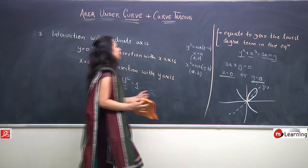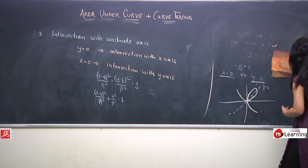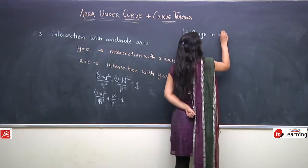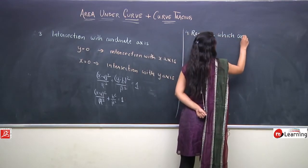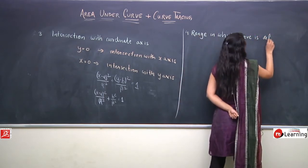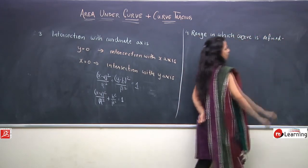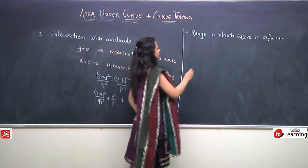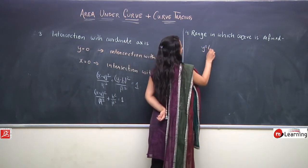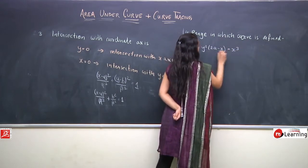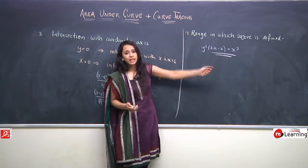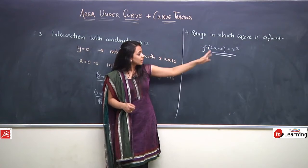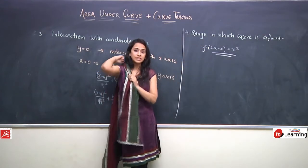Now let us discuss the next characteristic: we have to find the range in which a curve is defined. We need to find the domain — that is, for which values of x the curve exists and for which values it does not exist.